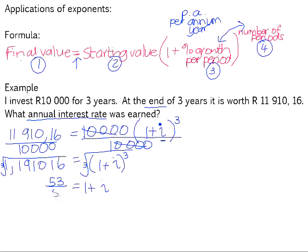And if you work out the cube root of the left-hand side on your calculator, you get a value of 53 over 50. We now want to minus 1 from both sides in order to get the i by itself, which gives you 3 over 50. And if we now times by 100 to get it into a percentage, 3 over 50 is actually 0.06 times by 100 is 6% per annum, which is your interest.